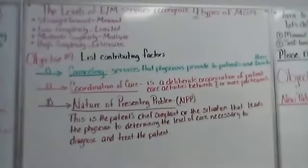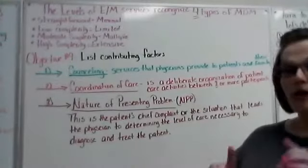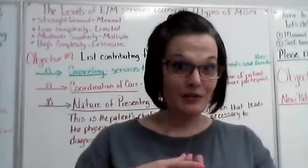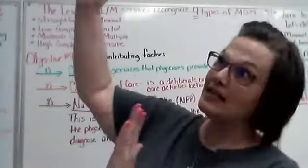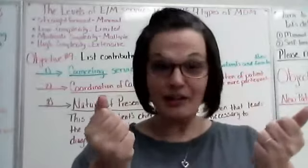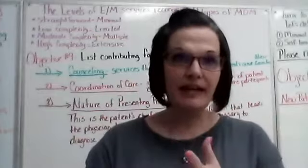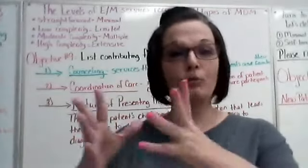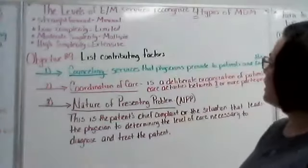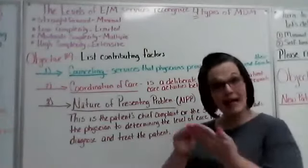Okay, the levels of E&M services recognize four types of MDM. Now, yesterday I had you look at 99201, 99202, and 99203, and then one more was 99204, which is our highest level. Because the higher those back numbers go, the more money is attached to those, okay?